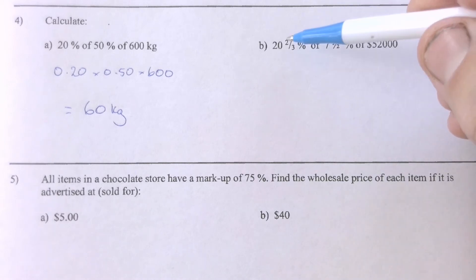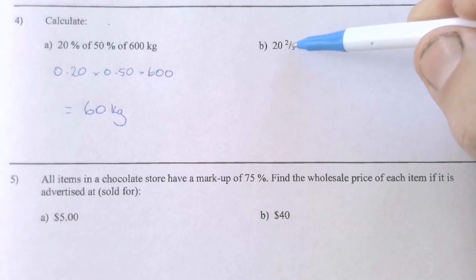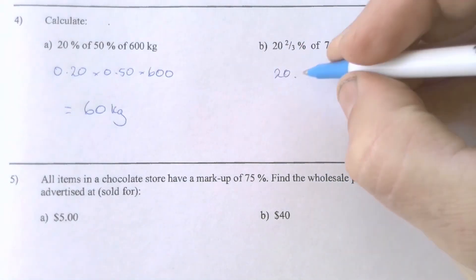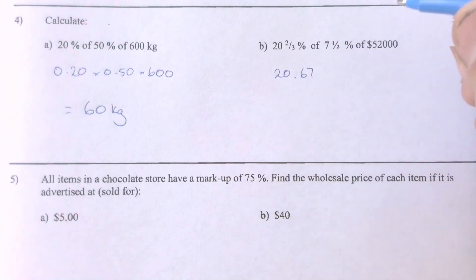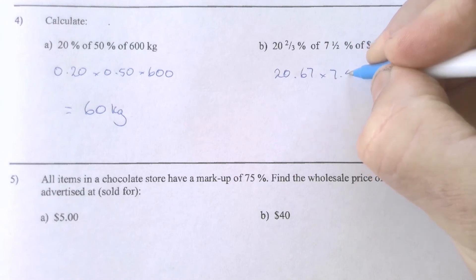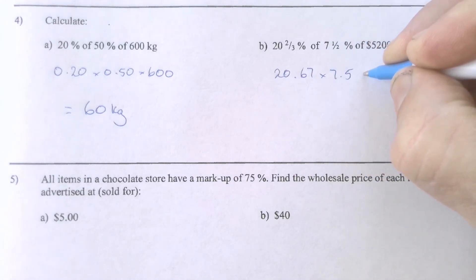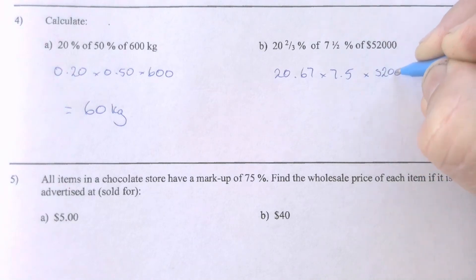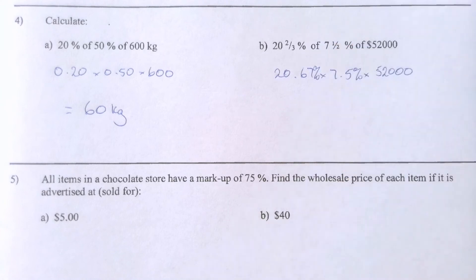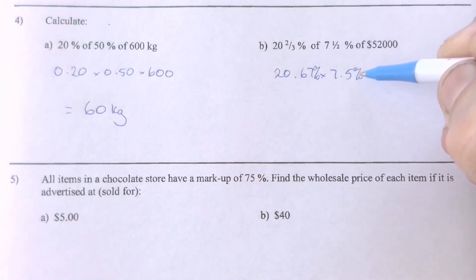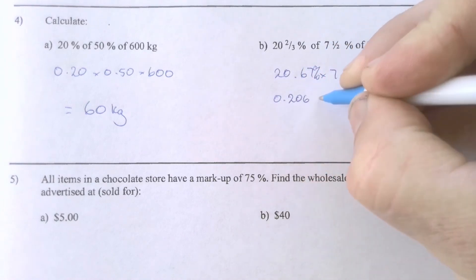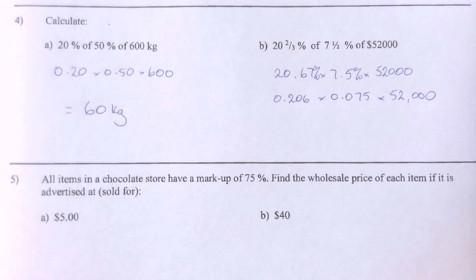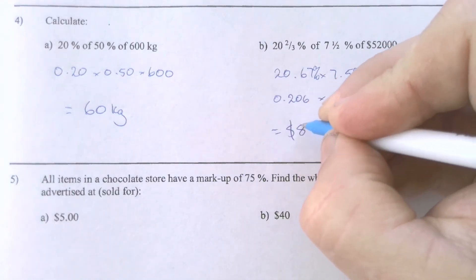For question 4b, I'd be converting these into decimals again — you can also put them in as fractions. Two thirds comes up pretty regularly and is worth committing to memory; it's 0.66666 repeating, so 0.67. So the expression becomes 0.67 × 0.075 × 52,000. Now don't forget these were left as percentages, so turn them into decimals first: 0.206 × 0.075 × 52,000. Pop that into your calculator and you'll get $806.